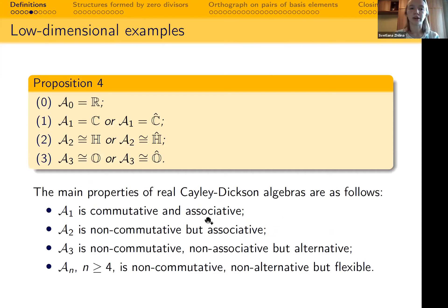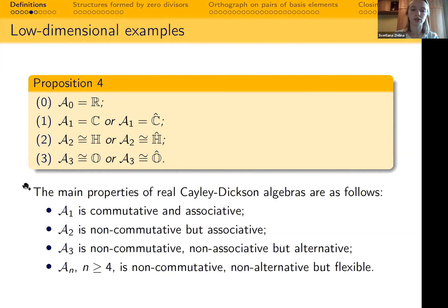The only algebra A_0 is just the field of real numbers over itself. The two algebras A_1 are the complex numbers and the split complex numbers. There are two algebras A_2 up to isomorphism, and similarly two algebras A_3. The main properties of these algebras are as follows. We lose commutativity, associativity, and alternativity on each step, but we do not lose flexibility.